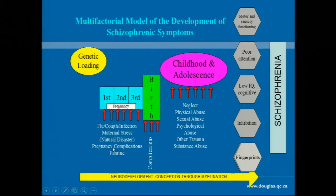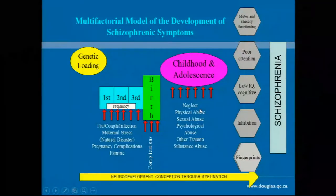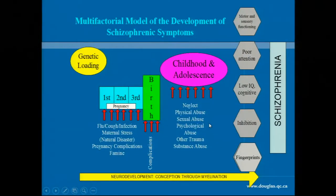Anything that might interrupt development to the fetus during the pregnancy — infections, famine, complications, and prenatal maternal stress — can increase risk. Complications during birth also increase risk. And because schizophrenia is considered a neurodevelopmental disorder, and because neurodevelopment does not finish until the early 20s when the prefrontal cortex finishes myelinating, anything that happens during childhood and adolescence, such as maltreatment or substance use, could also interfere with proper neurodevelopment.